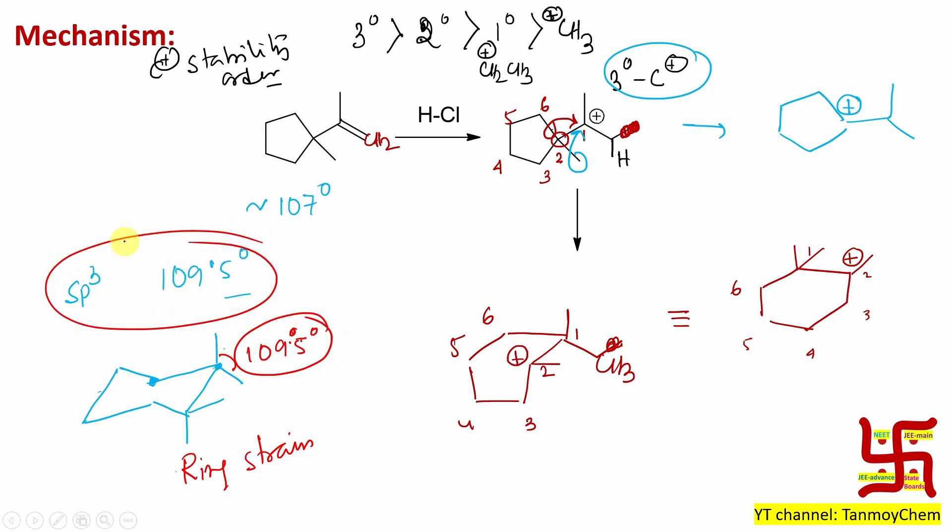So from here to here, ring strain release is obtained. That is the reason this migration takes place. Now this will not take place, this will. And ultimately there is a positive charge. By the way, when HCl H+ addition took place, what remained? Chloride minus, because H+ got initially attached here.